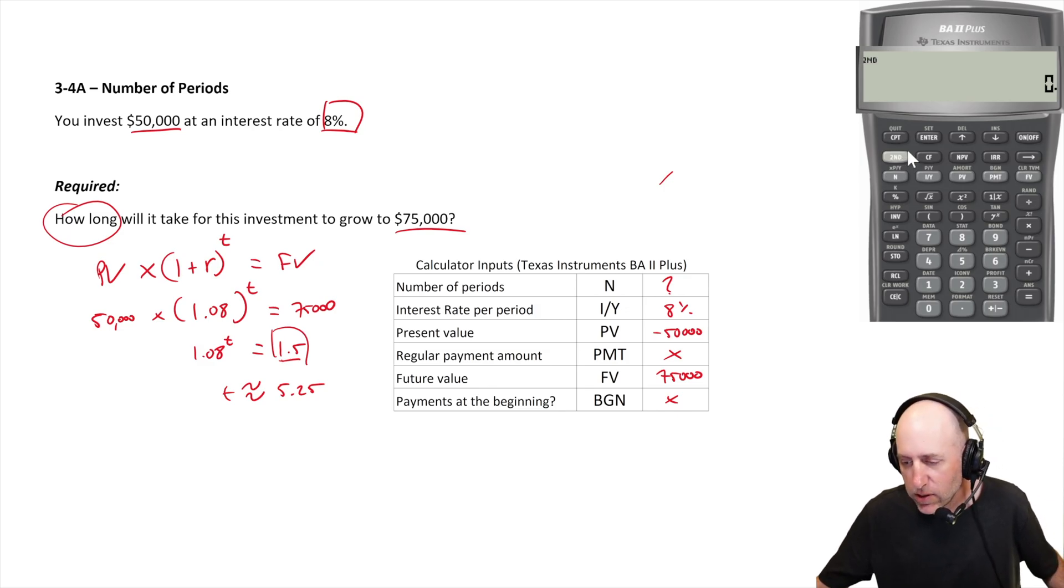So let's punch in our numbers. I always clear memory to the best of my ability. I go 8 is my IY, $50,000 negative is my PV, $75,000 positive is my FV, and that's everything. PMT is zero.